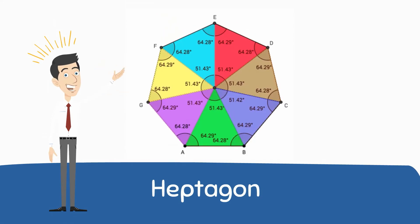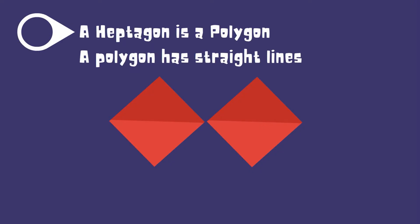A Heptagon is a seven sided polygon. A polygon has straight lines and a regular polygon has equal length sides and equal angles.